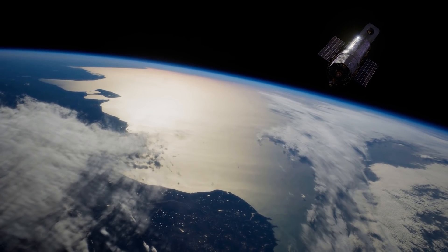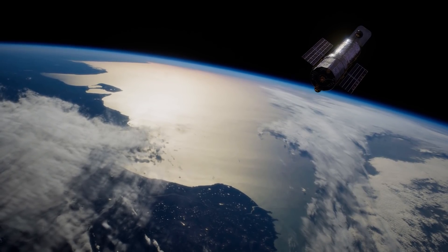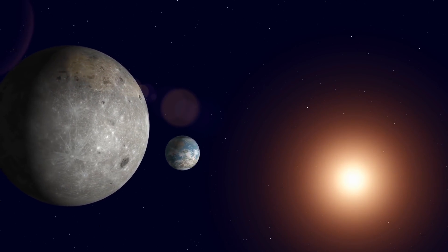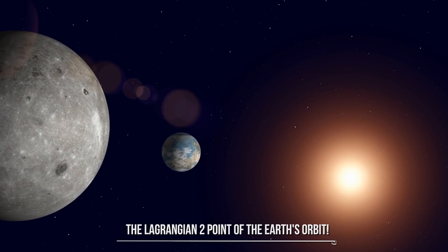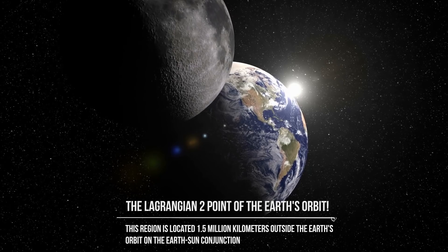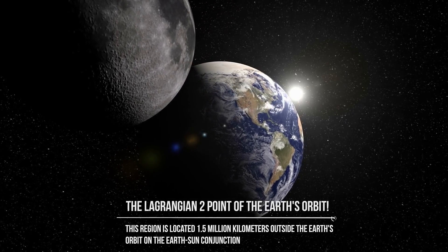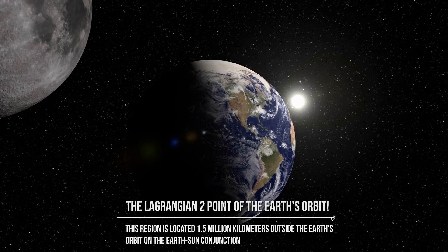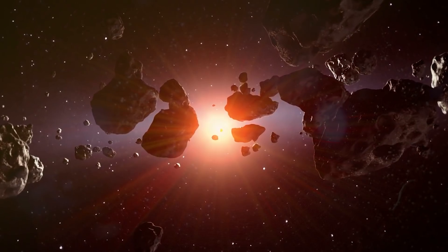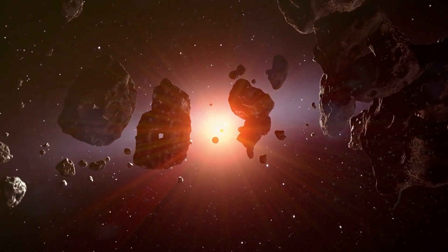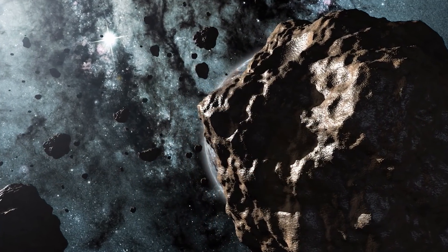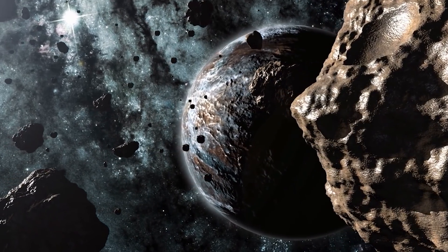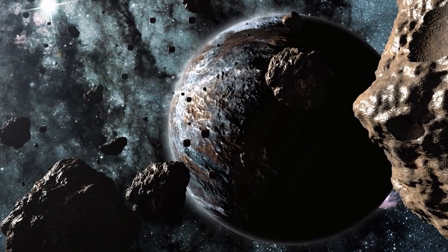Unlike Hubble, which orbits the Earth at an altitude of 600 kilometers, it has been decided that Webb will occupy the only point around Earth from which the Sun, the Earth, and the Moon can be shielded by a sunshade left in a fixed position. The Lagrangian 2 point of the Earth's orbit. This region is located 1.5 million kilometers outside the Earth's orbit on the Earth-Sun conjunction and is one of the five theorized in 1772 by the Italian Giuseppe Lagrange as gravitational islands, where an object of small mass can maintain its position relatively undisturbed compared to bodies of greater mass. Because of this characteristic, the Lagrangian point L2 is an excellent space observation point due to the stability of solar illumination that facilitates thermal management of instrumentation and pointing to deep space.